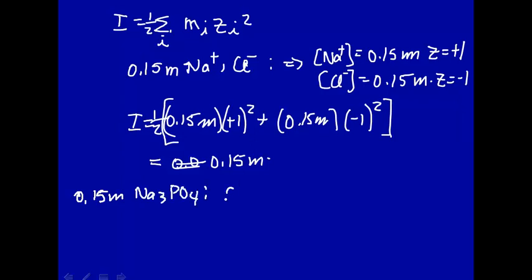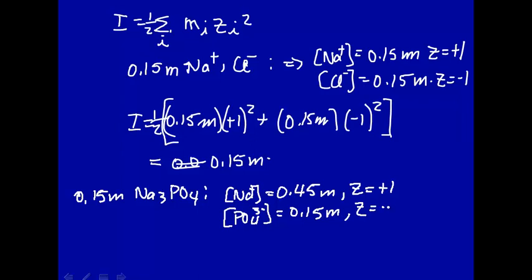Let's look at the sodium ions, concentration of sodium ions. Well, there's 3, so that's a little higher, 0.45 molal. And the charge on the sodium is plus 1 still. How about the phosphate? Concentration of phosphate is 0.15 molal, one particle there, but the charge is minus 3.